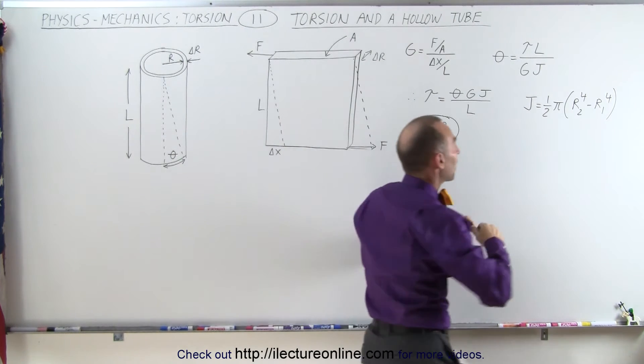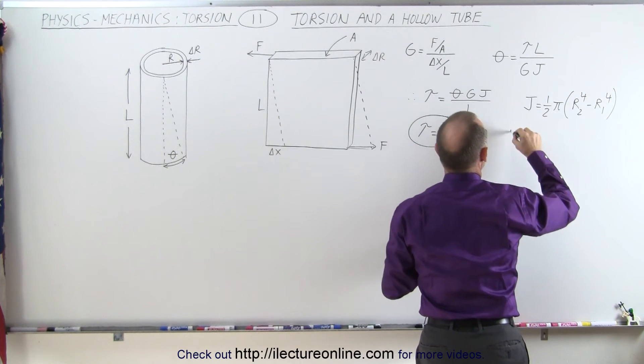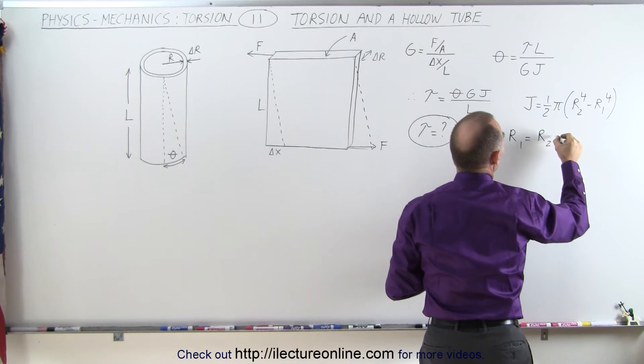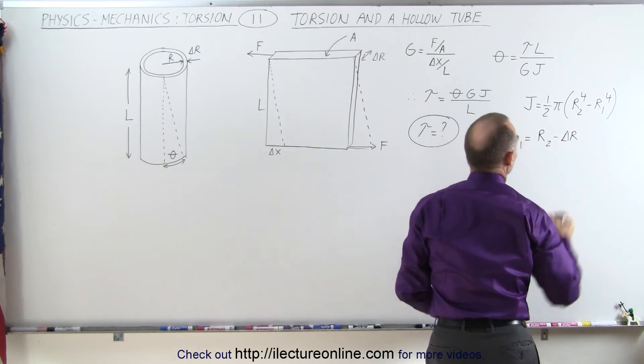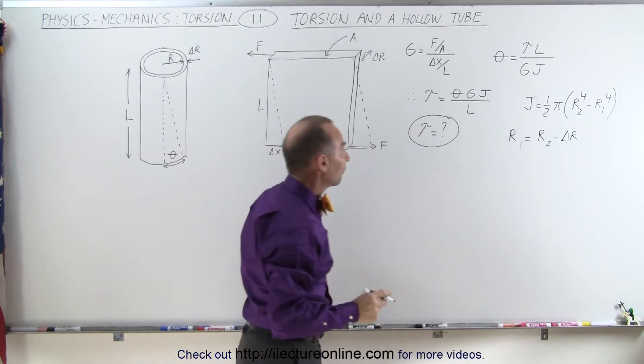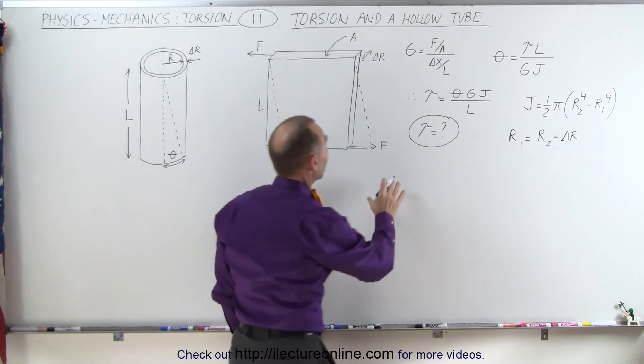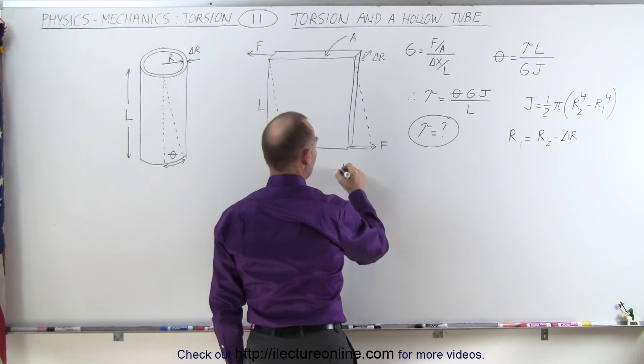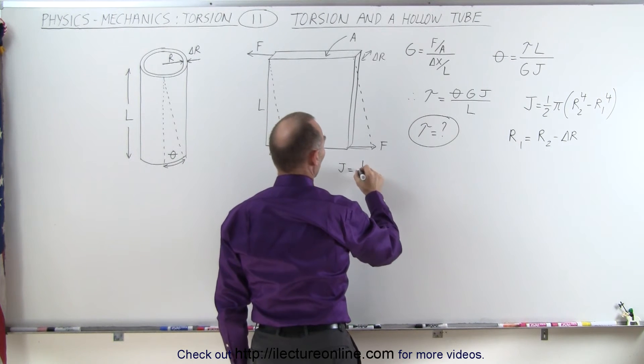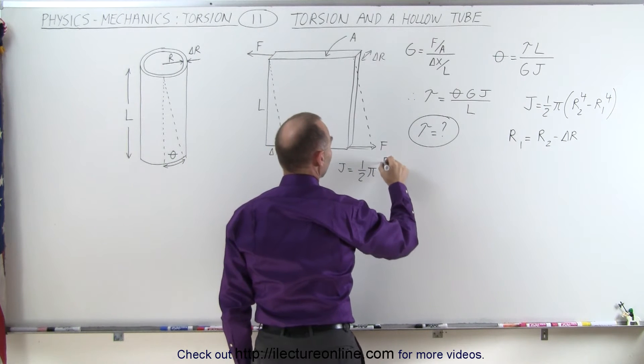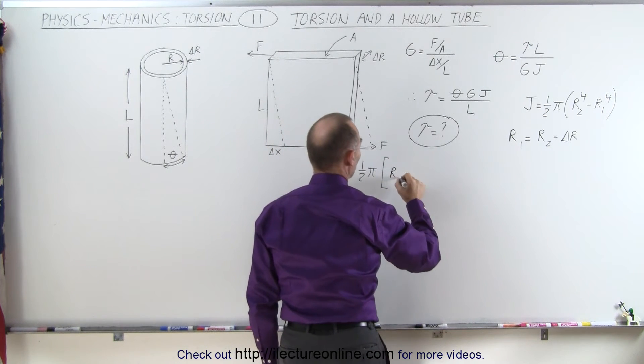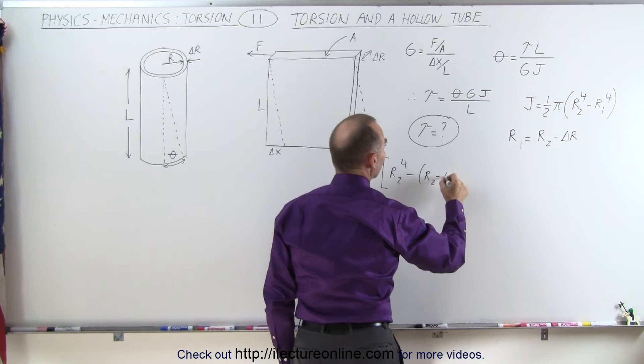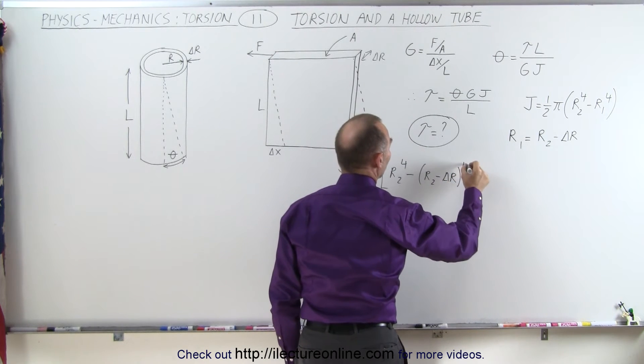Now the inside radius can be found as follows. The inside radius r₁ is equal to the outside radius minus delta r. So in other words, we can find j, we can find the torsional constant, by saying that j is equal to one-half π times r₂ to the fourth power minus the quantity r₂ minus delta r to the fourth power.